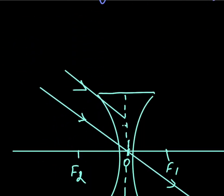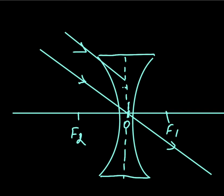As we have done in the case of a convex lens, first we will draw the lens. The concave lens is drawn, then the optic center is marked as O, and an imaginary line is drawn through it. We draw the principal axis passing through O, then mark the focal points F1 and F2. In the case of a concave lens, F1 is on the right side and F2 is on the left side — opposite to the convex lens.